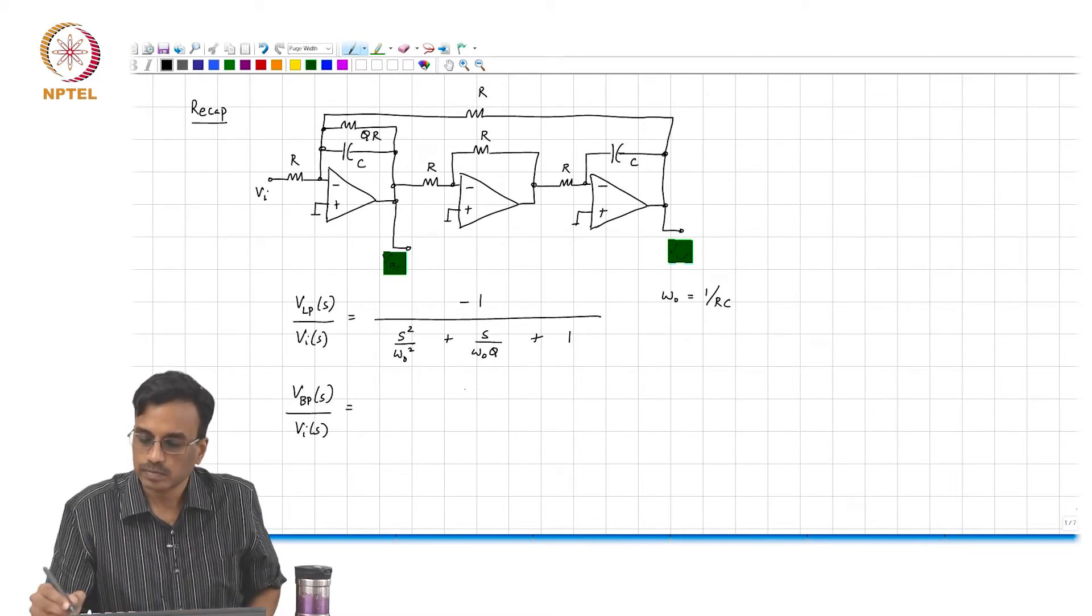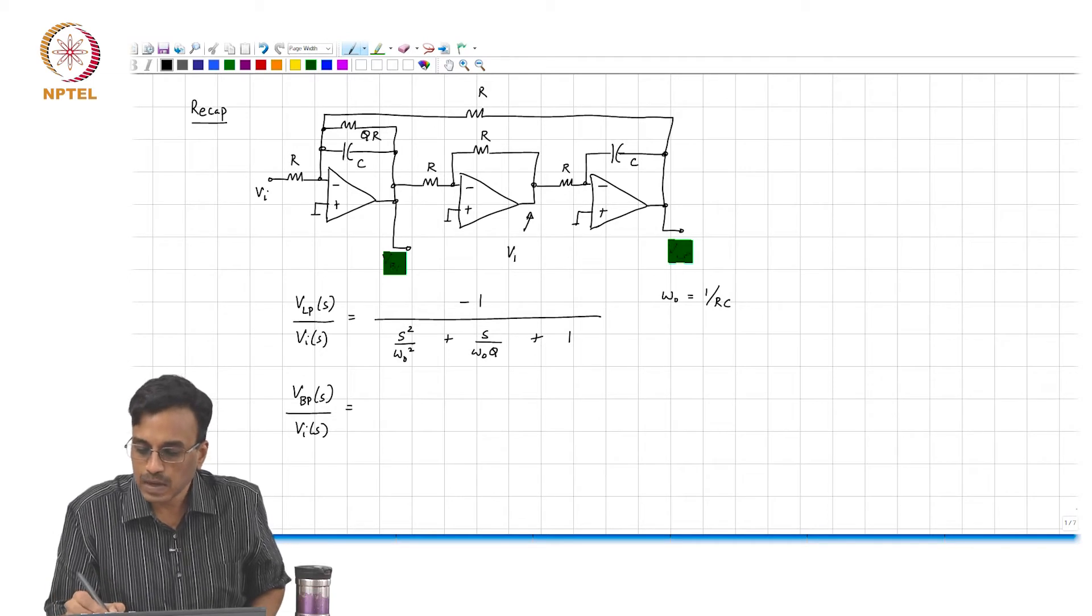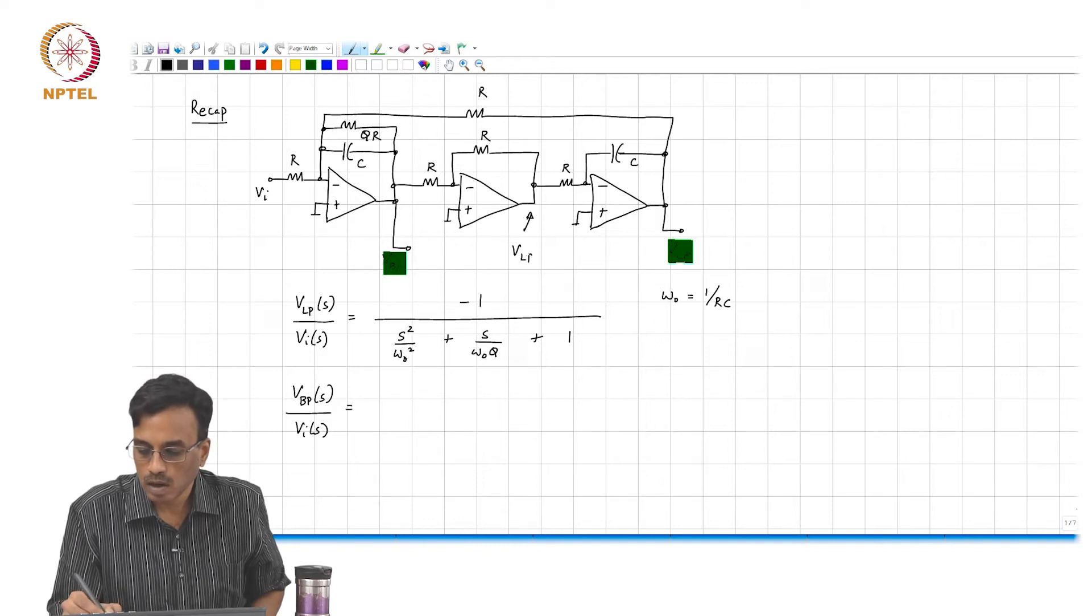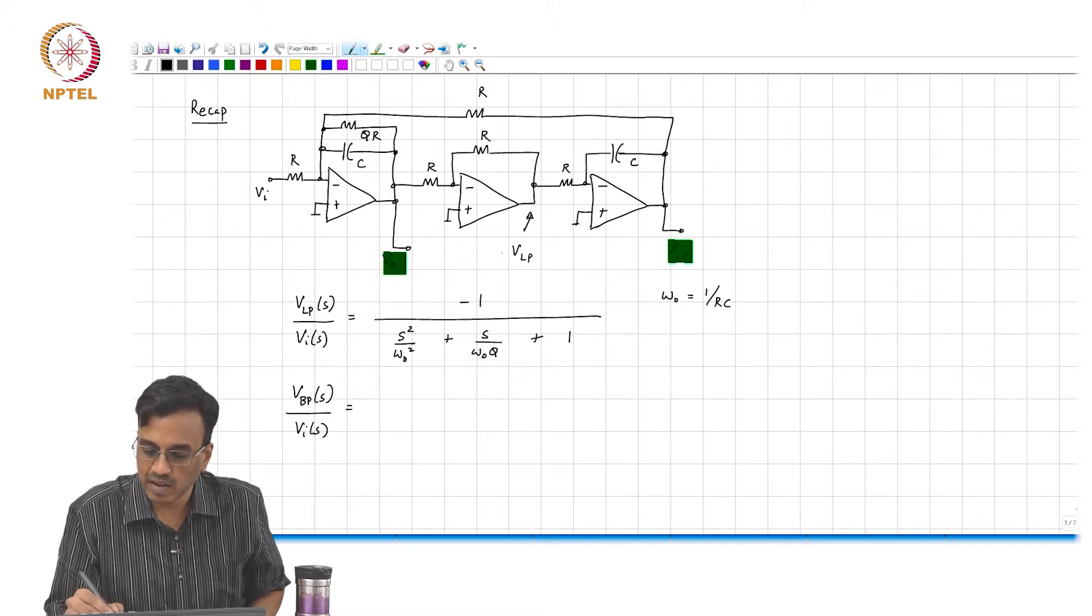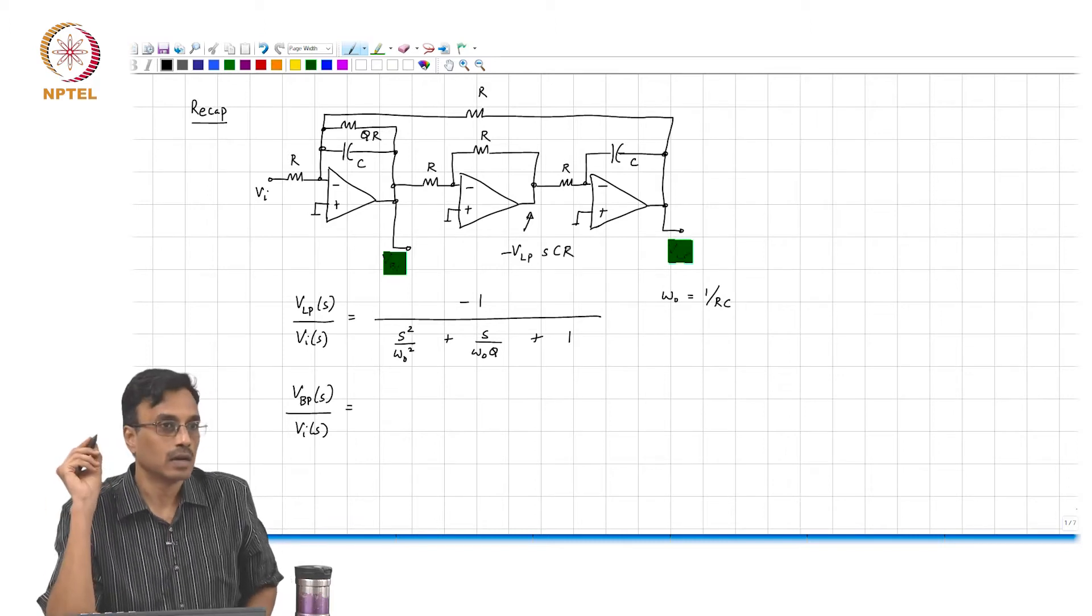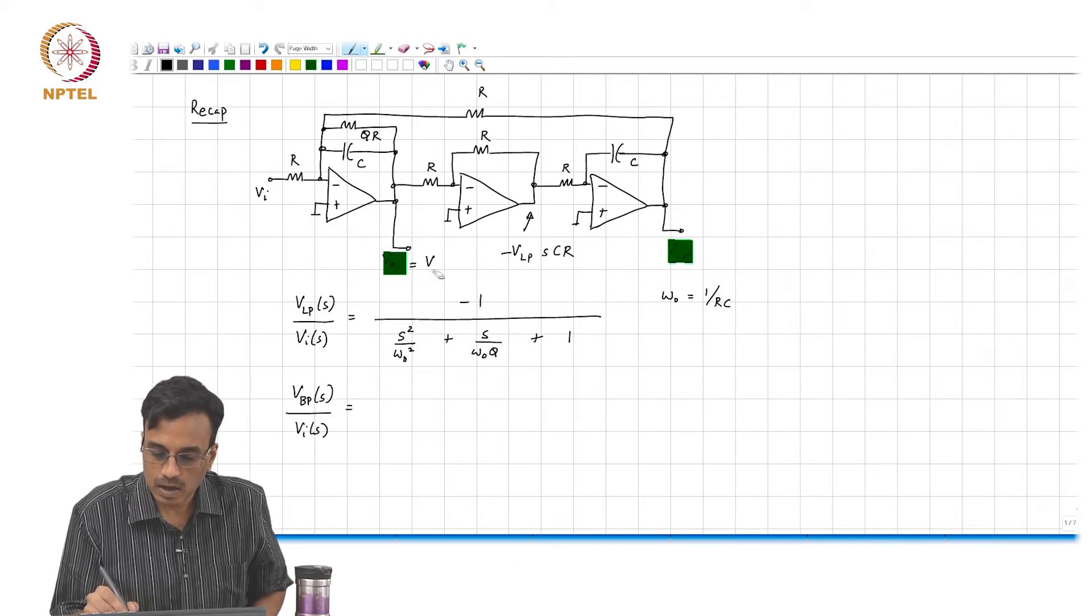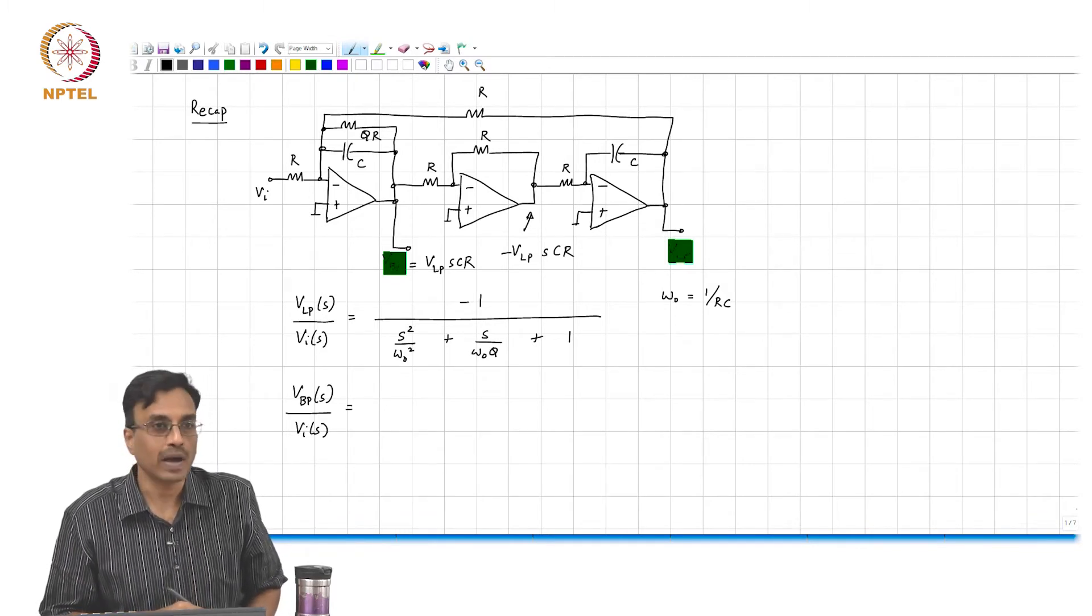What is the transfer function? This is v l p times, minus, this is an inverting integrator times SCR correct. So this must be v l p plus v l p times SCR. The low pass transfer function is an inverting low pass.